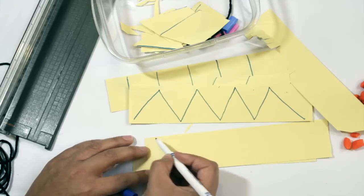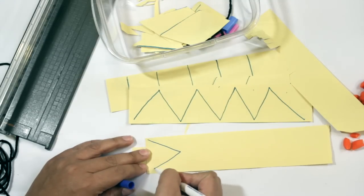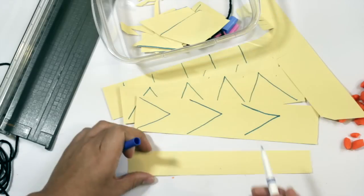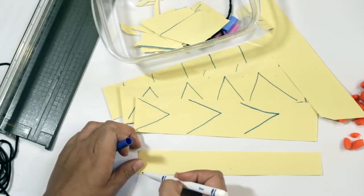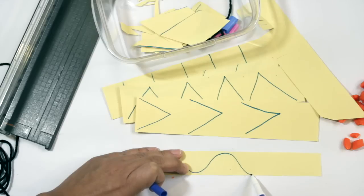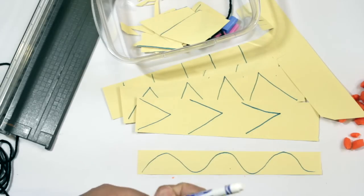You can also try kind of a point like this and then you can also try doing a curve. Now the curve one is going to be the most difficult because they're gonna have to learn how to turn the paper as they cut.